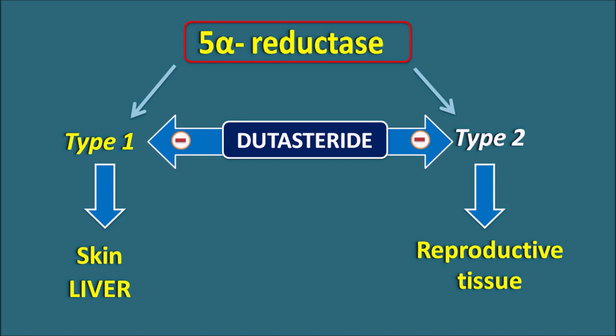Another related drug is finasteride, which only inhibits the type 2 enzyme. The 5-alpha reductase enzyme is very important for activation of androgens, producing the active metabolite of the androgens.